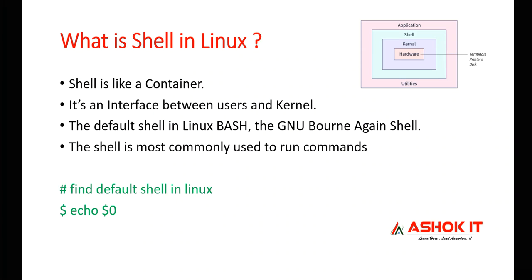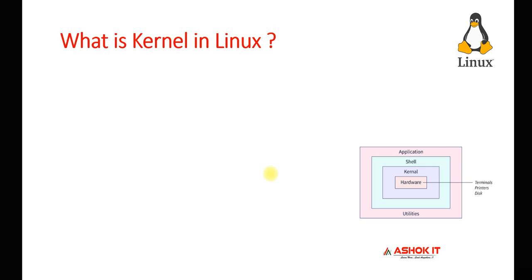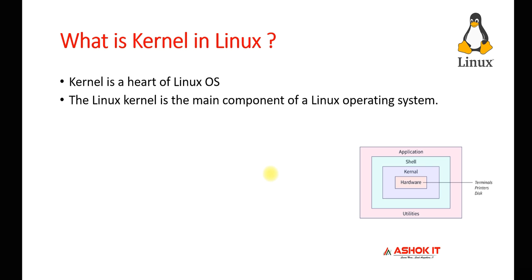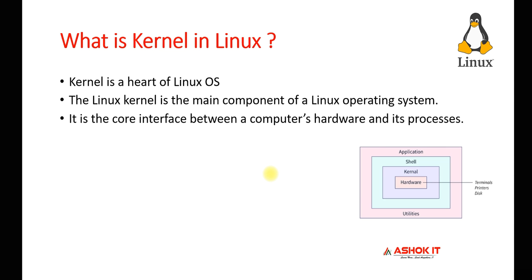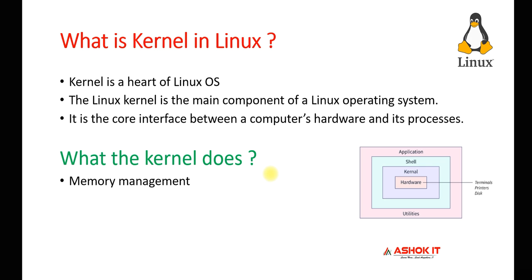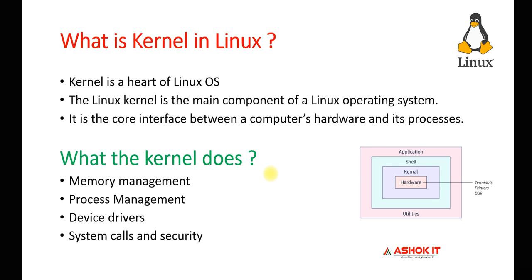This shell is used to process our commands and convert them into kernel understandable format. What is the kernel? Kernel is the heart of the Linux operating system and one of the main components — without kernel, we cannot use the Linux machine. The kernel is the core component and acts as a mediator between the processes we are running and the hardware. Kernel is responsible for memory management, process management, managing device drivers, making system calls, and taking care of security. Shell and kernel are two important components: shell mediates between user and kernel, kernel mediates between shell and hardware.